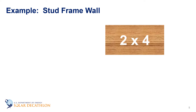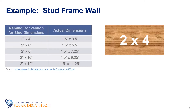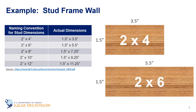Until World War I, lumber had these actual dimensions but this started to change and since 1964, 2x4 lumber has been standardized as 1.5 inches by 3.5 inches. Likewise, a 2x6 is actually 1.5 inches wide by 5.5 inches deep. Once you get to a 2x8, the pattern changes a bit and the actual dimensions are 1.5 inches by 7.25 inches. This new pattern continues for 2x10s and 2x12s as shown here.